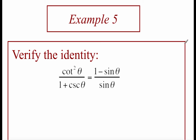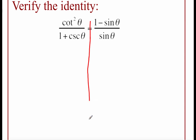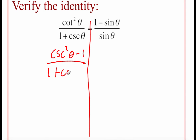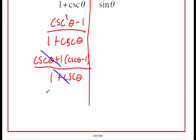Last example: we've got cotangent squared of theta over 1 plus cosecant of theta, and we're going to show that equals 1 minus sine of theta over sine of theta. Drawing my line down the middle, I'll work on the left-hand side. Using a Pythagorean identity on top: cotangent squared is the same as cosecant squared of theta minus 1, over 1 plus cosecant of theta. Factoring the numerator as a difference of perfect squares gives cosecant of theta plus 1 times cosecant of theta minus 1. The cosecant plus 1 in the numerator and 1 plus cosecant in the denominator are the same — they cancel out.